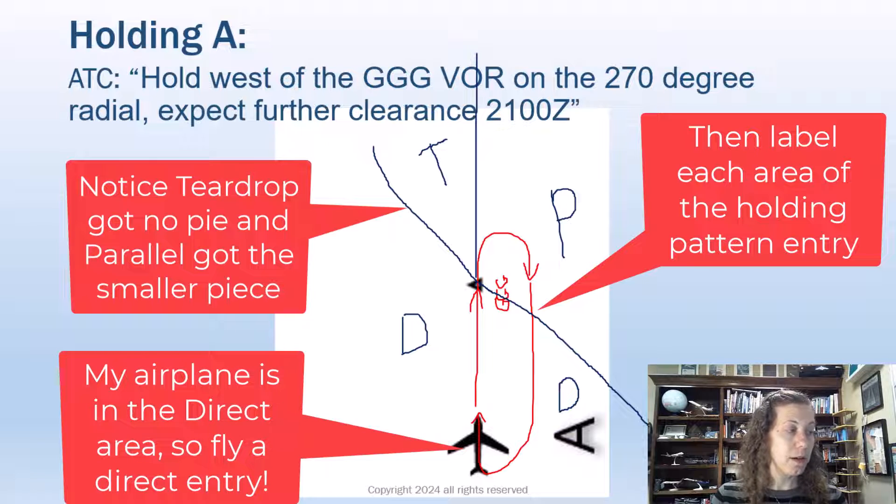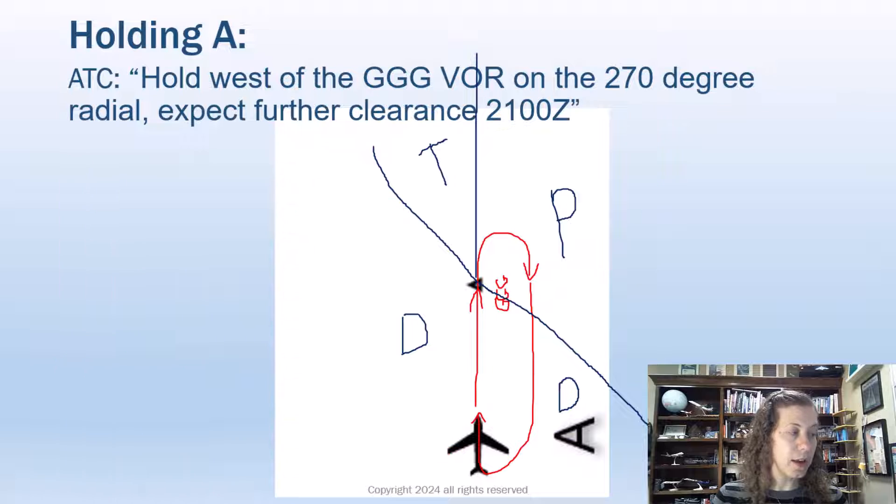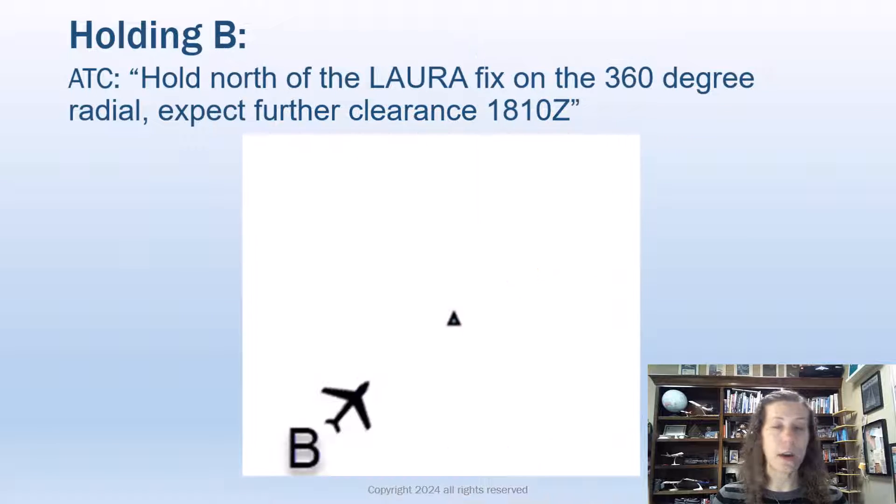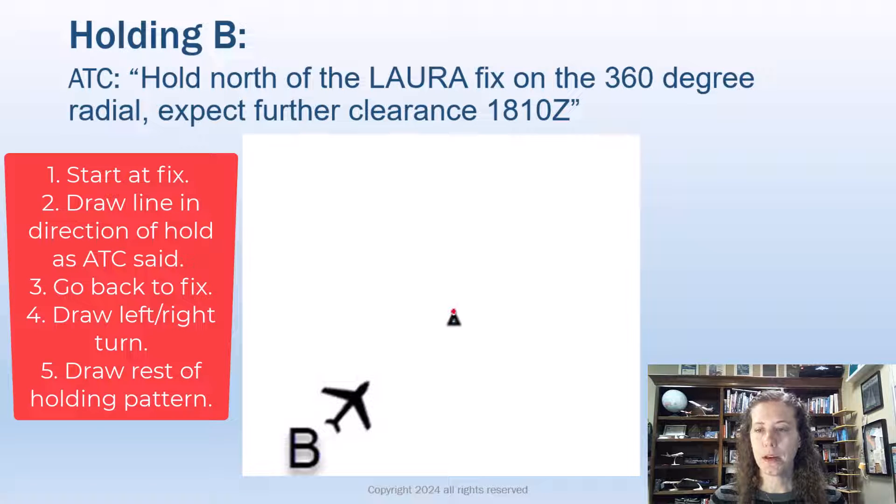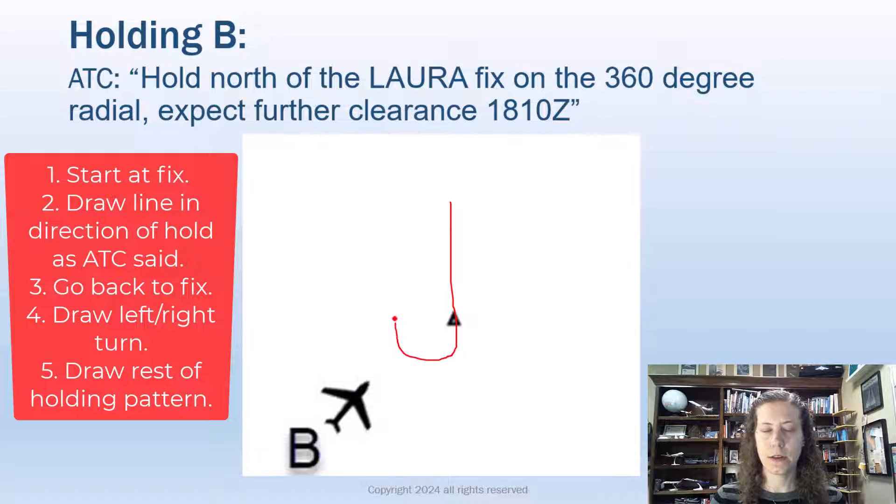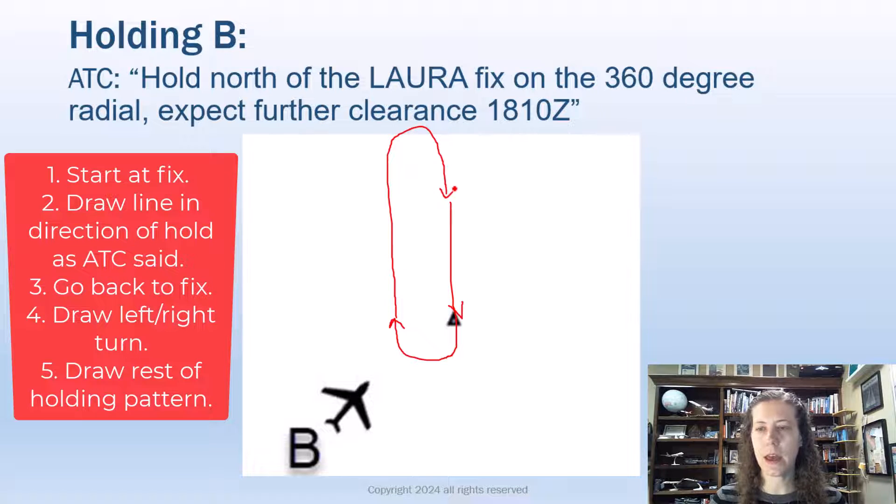Okay, let's try another example. Practice drawing and just follow along here. This time it says hold north. So I'm going to draw a line holding north of the fix, on the 360-degree radial. It doesn't say anything about turns, so I go back to my fix. I make a right-hand turn, something like this. And then I can draw the rest of my holding patterns like that.